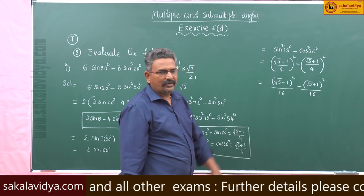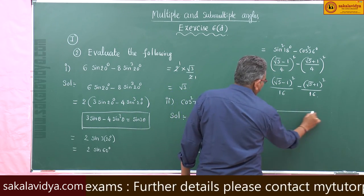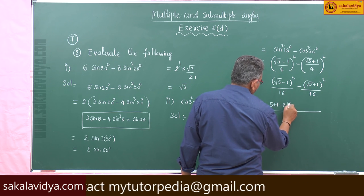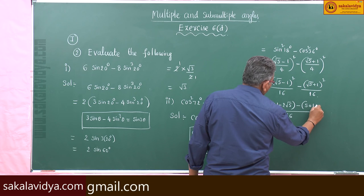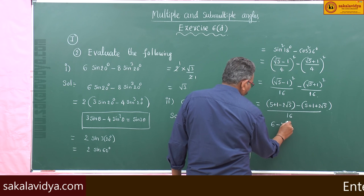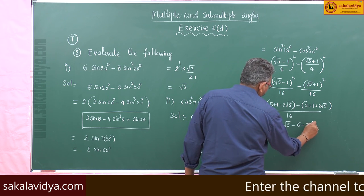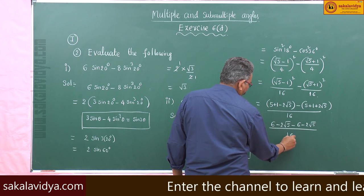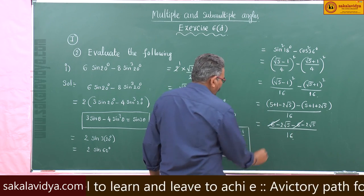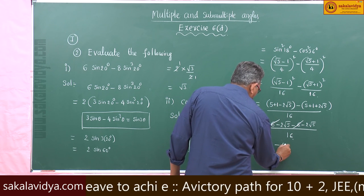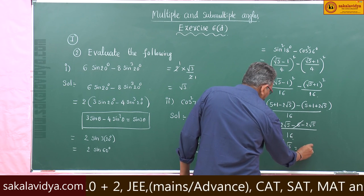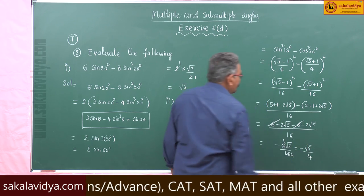Simplifying, the 6 terms cancel. We are left with -4√5 / 16, which simplifies to -√5 / 4. This is the final result.